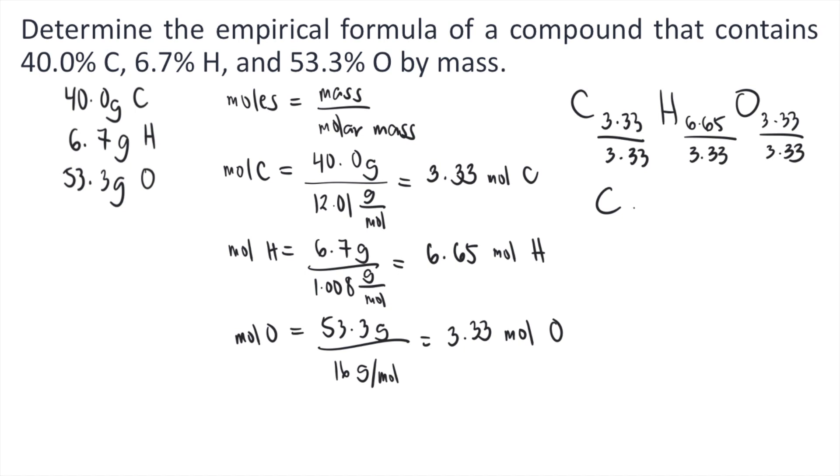For hydrogen, 6.65 divided by 3.33, that's approximately equal to 2. And for oxygen, that's equal to 1. So C1, H2, O1.